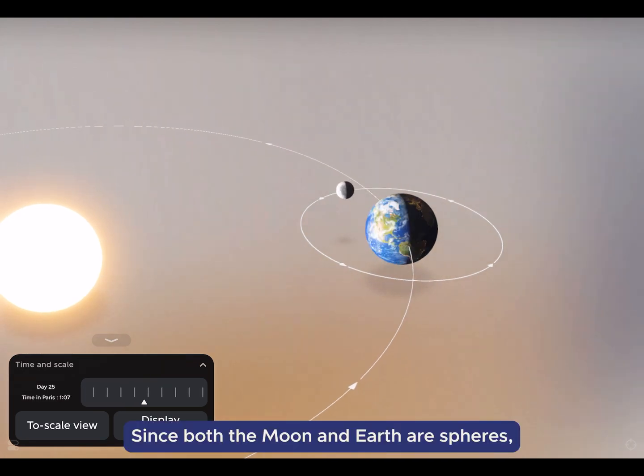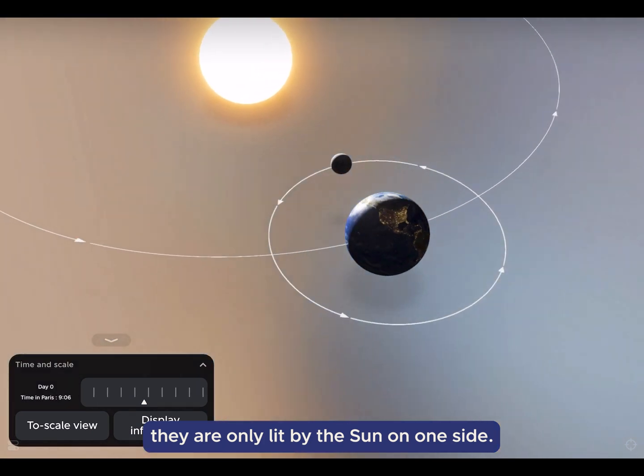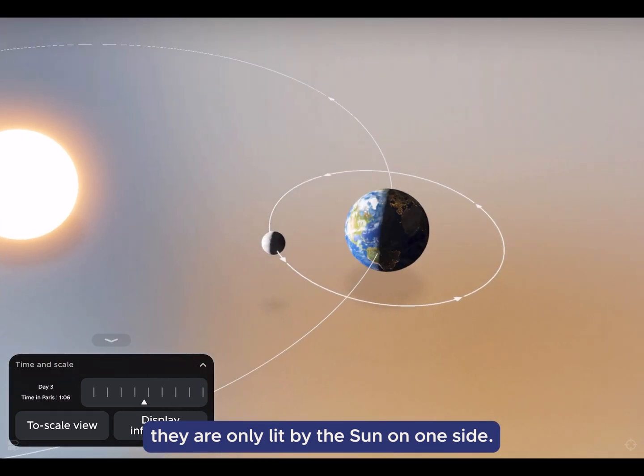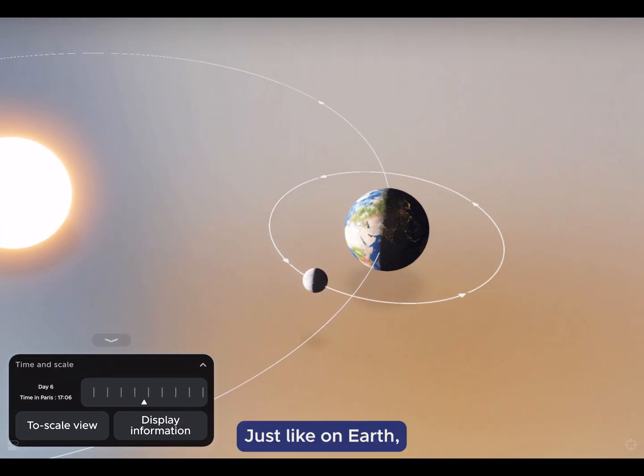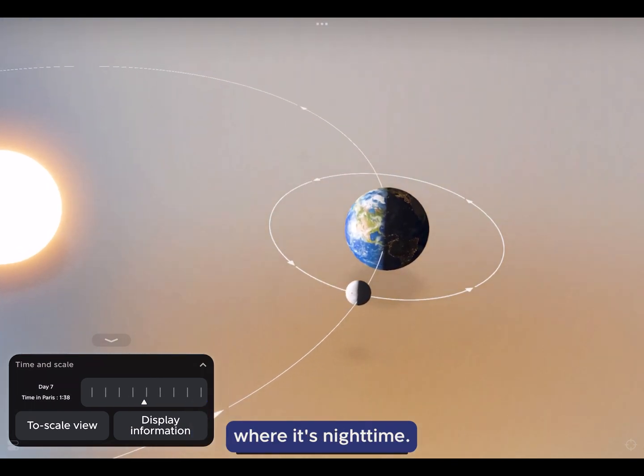Since both the Moon and Earth are spheres, they are only lit by the Sun on one side. Just like on Earth, there is a half of the Moon where it's daytime and a half where it's nighttime.